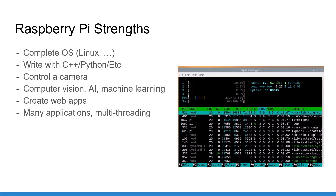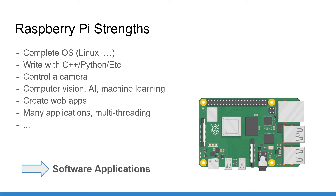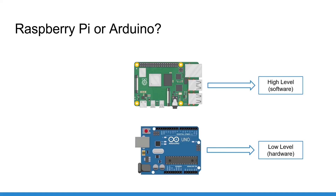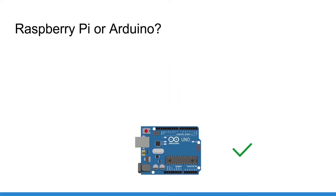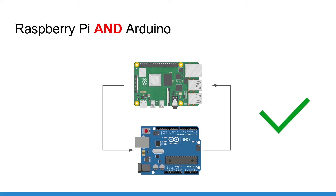To recap: Arduino is better for hardware or low-level control, and Raspberry Pi is better for application software or high-level control. Depending on your project, maybe you just need one board. If your application is to take some photos, process them, and publish them on a web page, just go with a Raspberry Pi. If you want to open a door with a motor when you detect a presence nearby, Arduino will do 100%. But if you need to combine both hardware control and high-level software applications, why not use the best of both worlds and use Raspberry Pi and Arduino together.